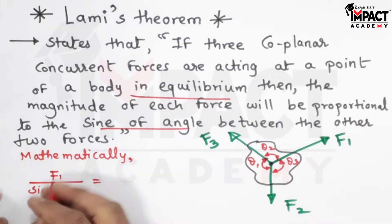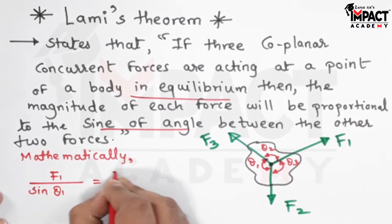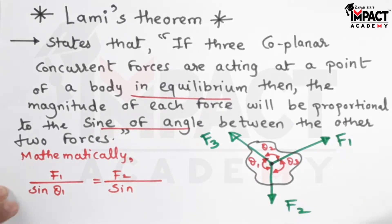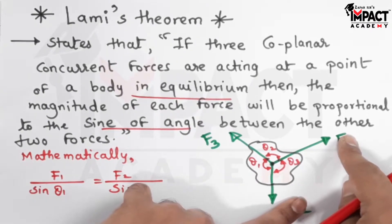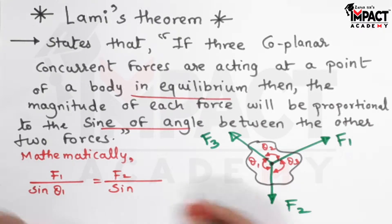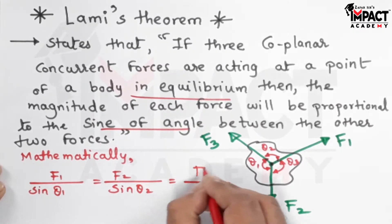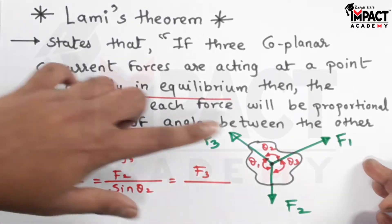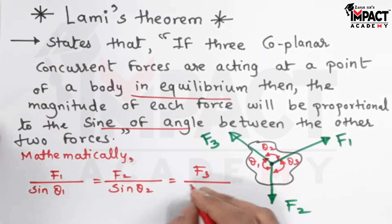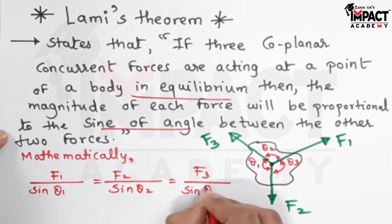Similarly, when I take F2 in the denominator, we have sine of angle between F1 and F3, that is theta 2. Similarly, when I take F3, then the angle should be taken between F1 and F2, which is theta 3, so sine of theta 3.